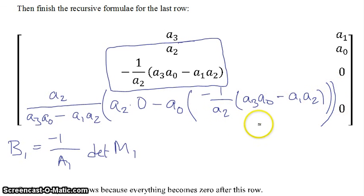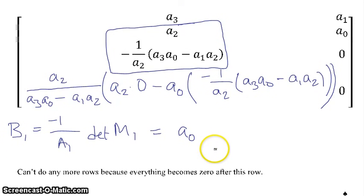Now note, this last term here, this B1, is actually just equal to A0, so things start to cancel out. This cancels out because there's a 0 times the A2. And then this guy here is A1, but this guy here is minus 1 over A1. So they cancel out to give you a negative 1, and you multiply that onto the negative A0, and you just get A0 out. So that's our fourth row. And you can't do any more rows here because everything after this row becomes 0.